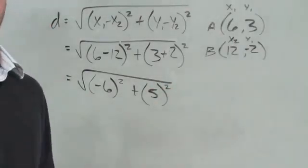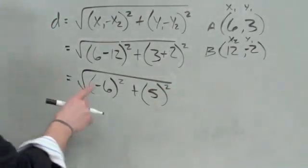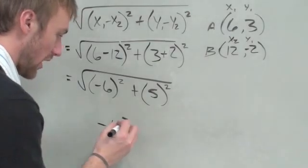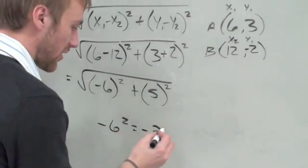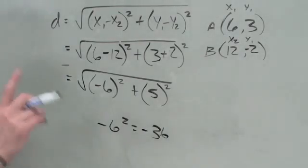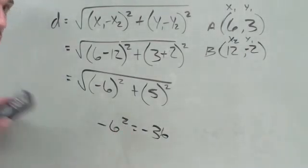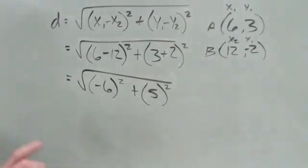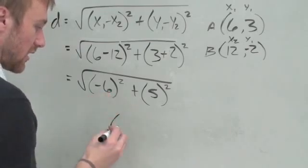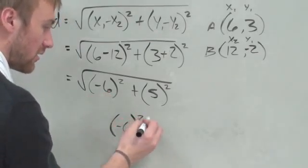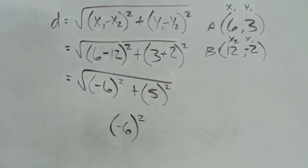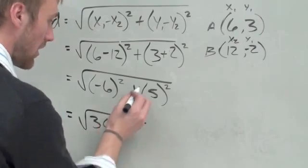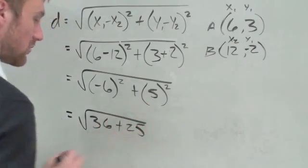Now this is where a lot of people mess up in their calculator. What a lot of people will do is type negative 6 squared. Guess what? Your answer is going to be negative 36. That's wrong. The reason is it's squaring your 6 and then putting the negative on later. So when you put this in your calculator, make sure you put parentheses: (-6) squared. That's how you should put it in your calculator. And you will get the correct answer which is positive 36. Plus 5 squared which is 25.